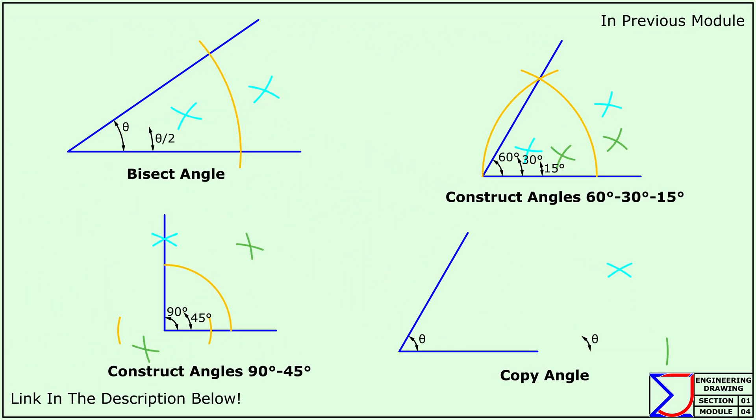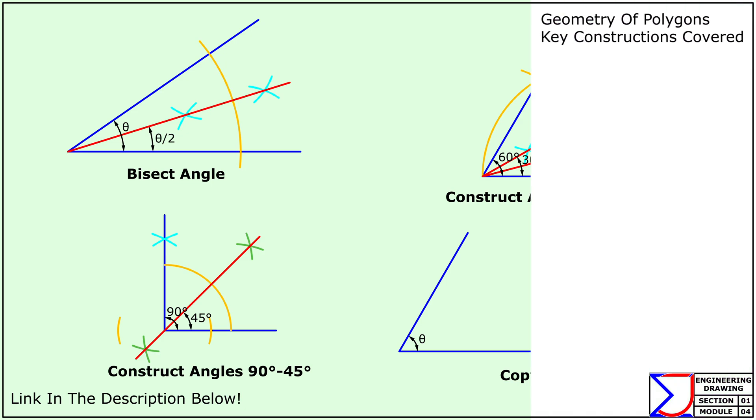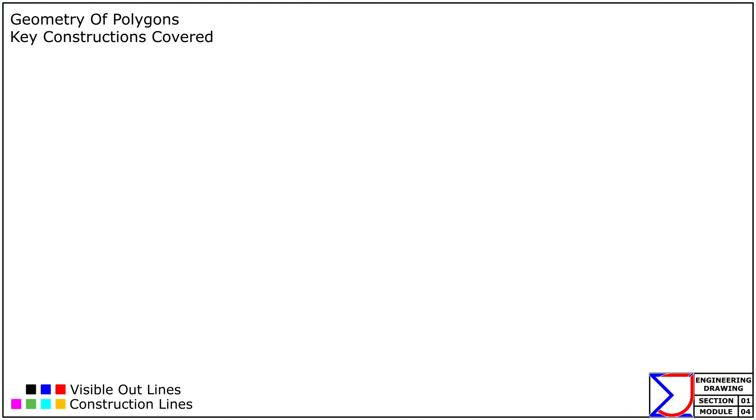Previously we explored various angle constructions, including angle bisection and methods to construct standard angles. Now let's move on to polygons. In this module we will cover essential techniques for constructing regular polygons with precision. The key constructions include: one, inscribing a regular polygon in a circle; two, inscribing a circle within a regular polygon; and three, constructing a regular polygon.